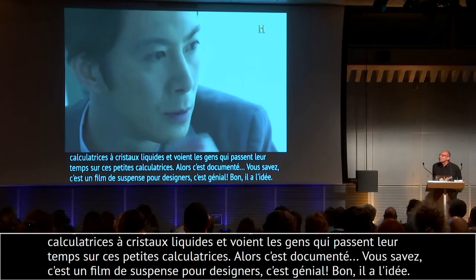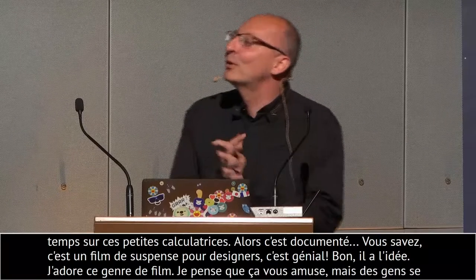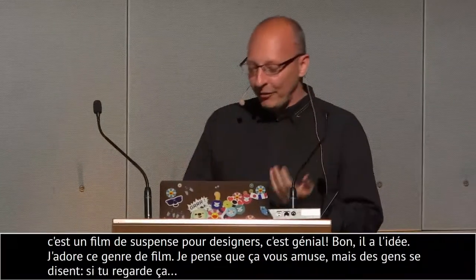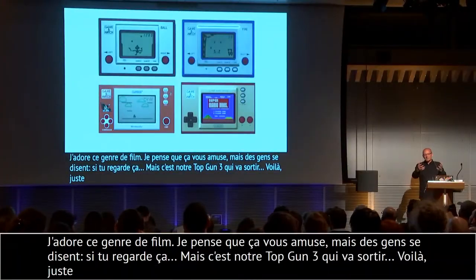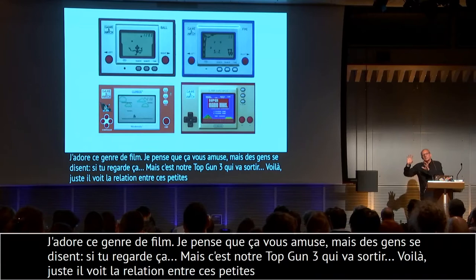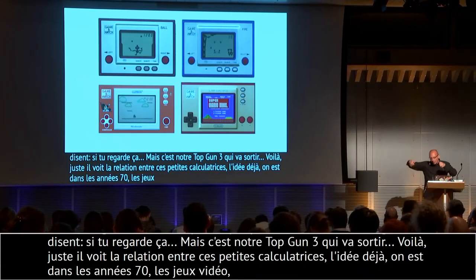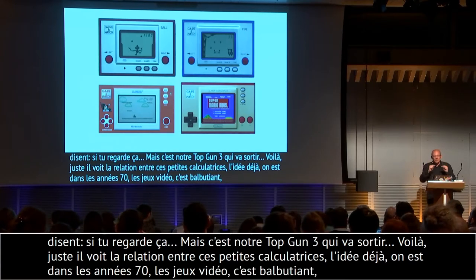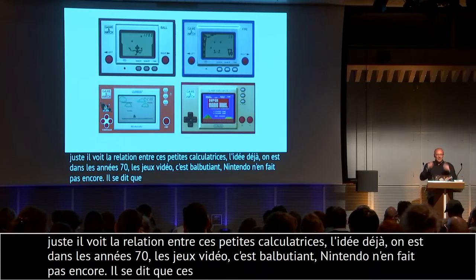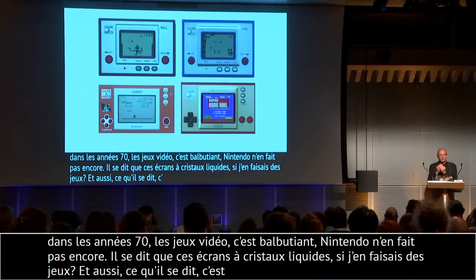Il voit les gens autour de lui — pour moi, un designer, c'est quelqu'un qui regarde autour de lui. L'usage qu'ont les gens d'une technologie. À l'époque des années 70, on avait des petites calculatrices Texas Instruments à cristaux liquides. Et il voit les gens passer leur temps sur ces petites calculatrices. Déjà, on est dans les années 70, les jeux vidéo c'est balbutiant — Nintendo ne fait pas de jeux vidéo à l'époque, c'est des consoles sur des grosses télés. Il a l'idée : ces écrans à cristaux liquides qui ne coûtent rien, si j'en faisais des jeux ? Et aussi, à cette époque, c'était la honte de jouer en public.